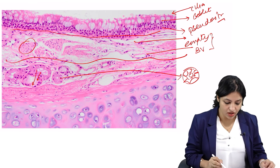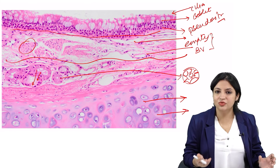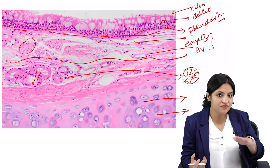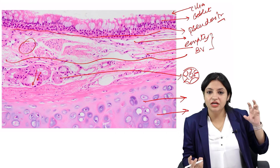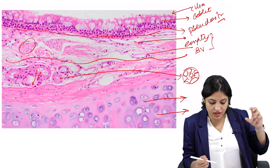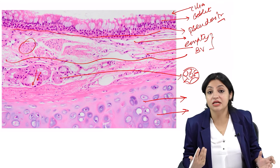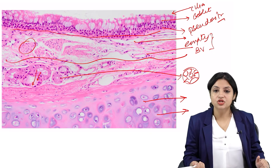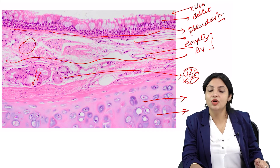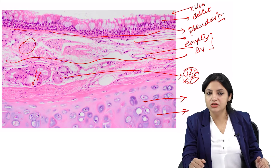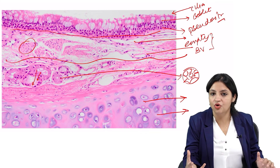Now let's come to the next part. There is a base with a very clear blue homogeneous layer with lacunae containing some cells — this is hyaline cartilage. Once you see cartilage, you can say this is probably a bronchus — a normal bronchus, because here there is no pathology involved.